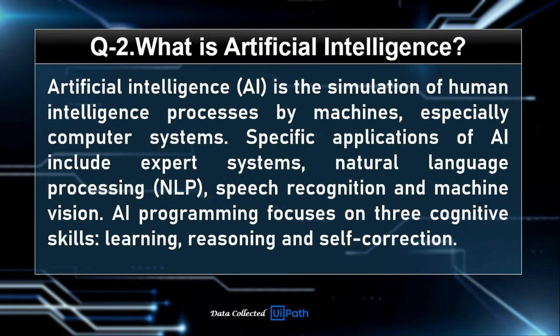Question number 2: What is Artificial Intelligence? AI is the simulation of human intelligence processes by machines, especially computer systems. Specific applications of AI include expert systems, natural language processing (NLP), speech recognition, and machine vision. AI programming focuses on three cognitive skills: learning, reasoning, and self-correction.